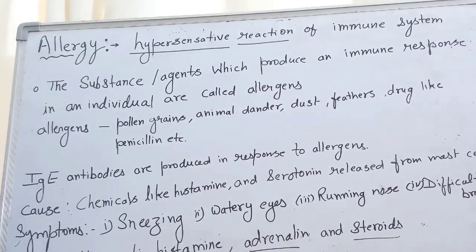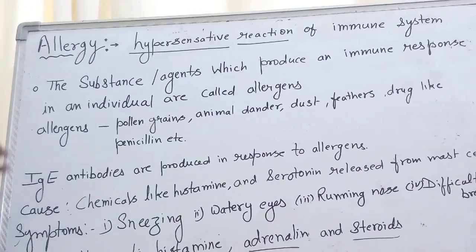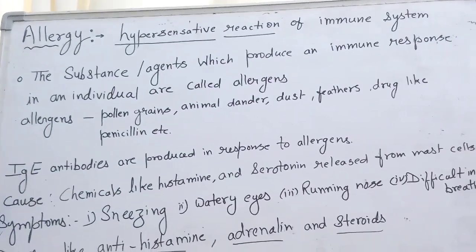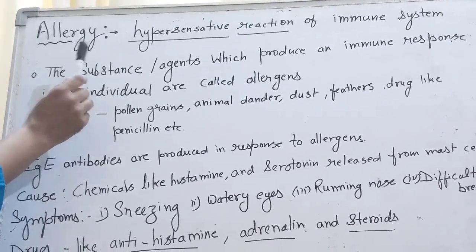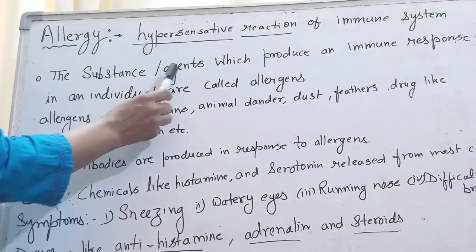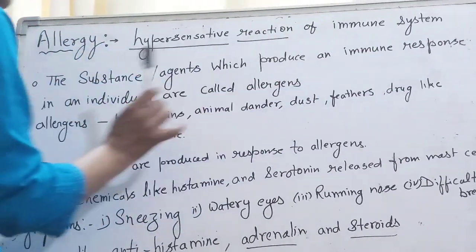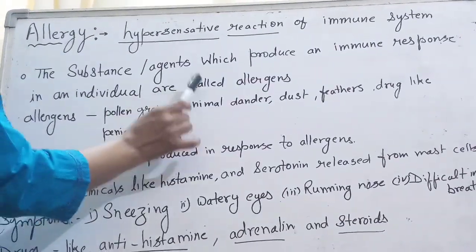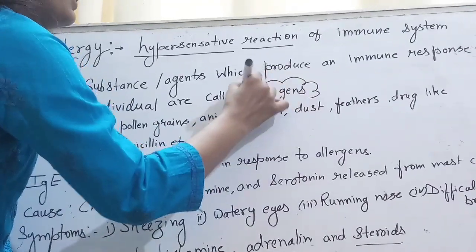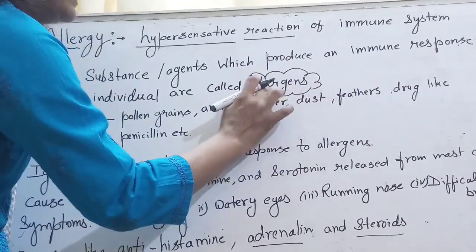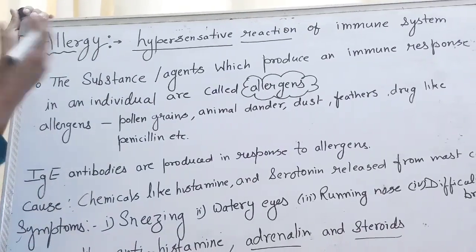Mostly this comes in exam questions, asking about the chemicals — what is the same thing in your immune system. The substance — it means the agent which produces an immune response in an individual — is called an allergen. So allergy occurs because of some allergens, some substances. That is called allergens.